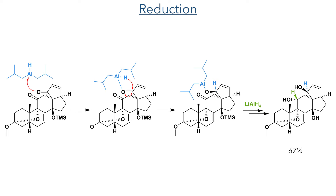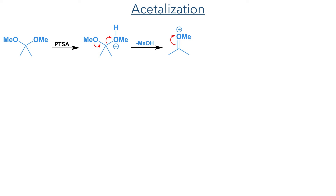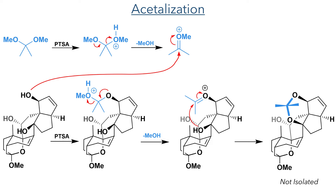With the hydroxyl groups now revealed, the next step of the synthesis was an acetalization reaction. This was carried out using dimethoxypropane and PTSA as the acid catalyst. This protonates one of the oxygen atoms and allows it to be eliminated, producing a methyl oxocarbenium which is rapidly attacked by the least sterically hindered secondary hydroxyl group. Further protonation and elimination produces another oxocarbenium which is then attacked by the tertiary hydroxyl group, which is on the same face of the molecule and best orientated to intercept it. This produces a six-membered acetal.